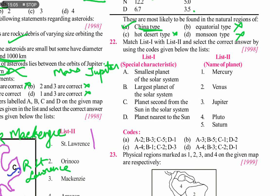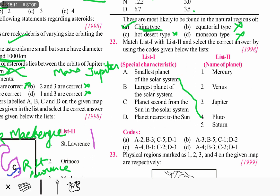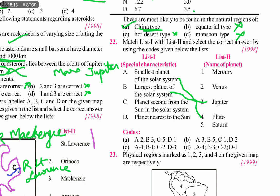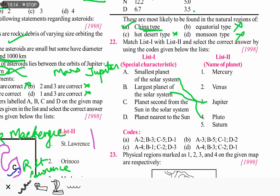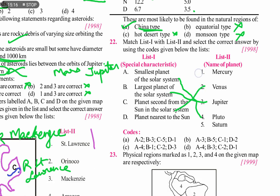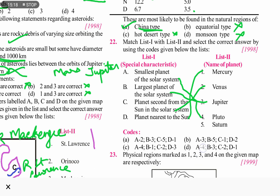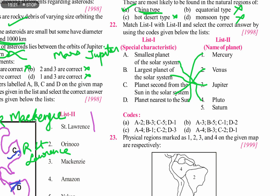Question 22 asks to match the following. At the time this question was posed, Pluto was considered a planet, so the smallest planet was Pluto. Largest planet of the solar system is Jupiter. Planet second from the sun is Venus. Planet nearest to the sun is Mercury. The correct answer is option D: A matches 4, B matches 3, C matches 2, D matches 1.